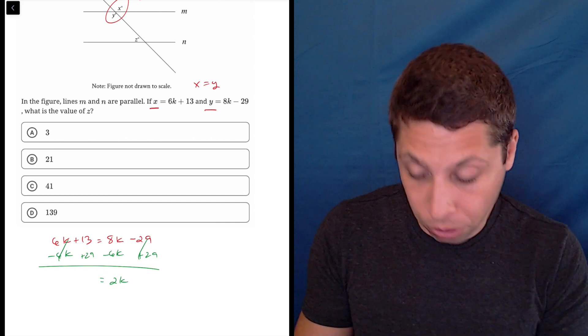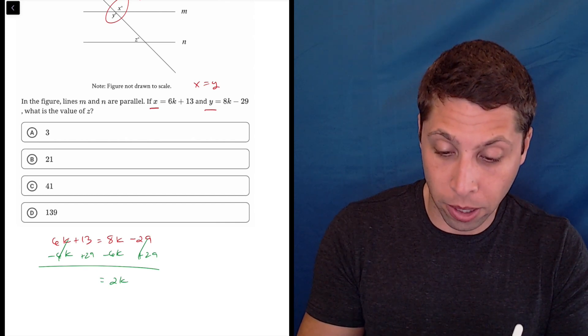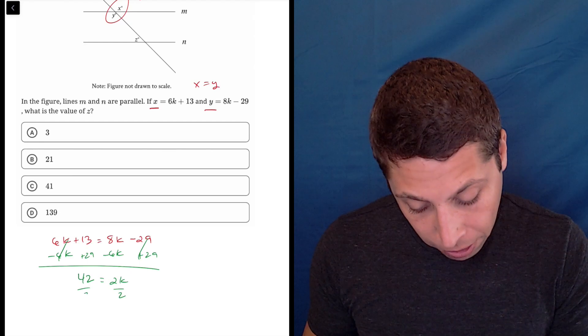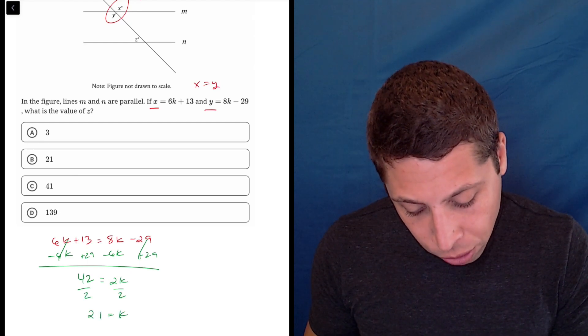This gets me 2K, and 13 plus 29 is 42. So if I divide by 2, I get that K is 21.